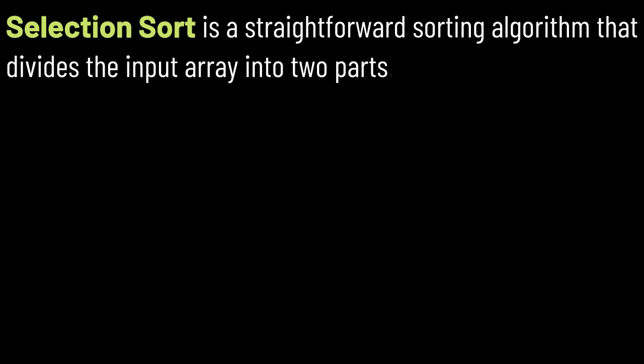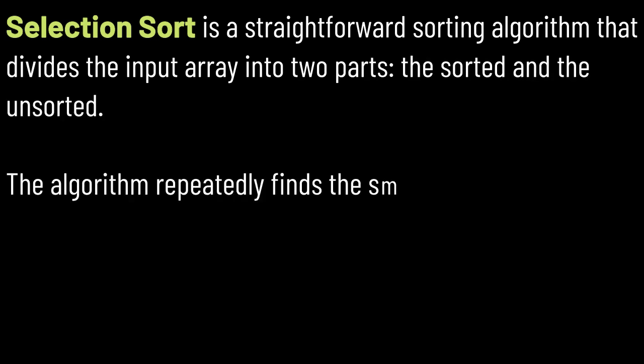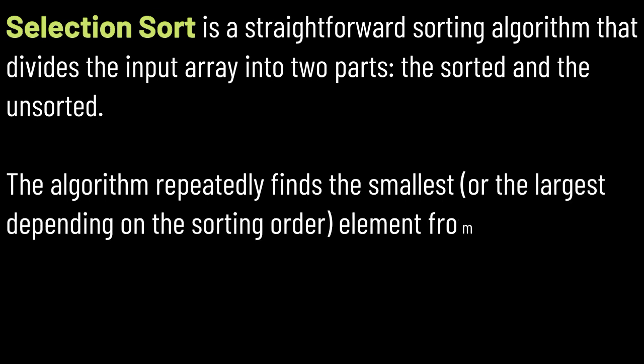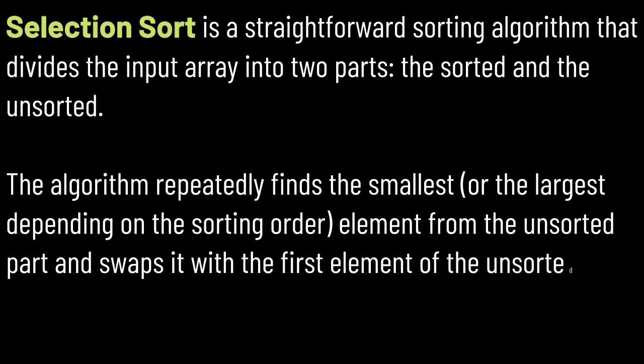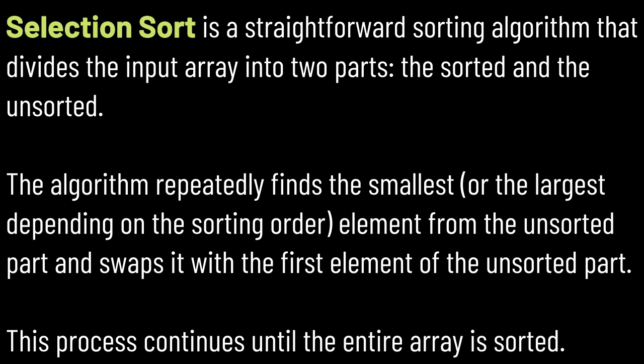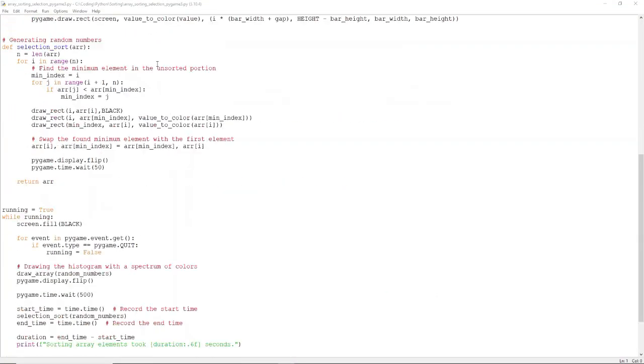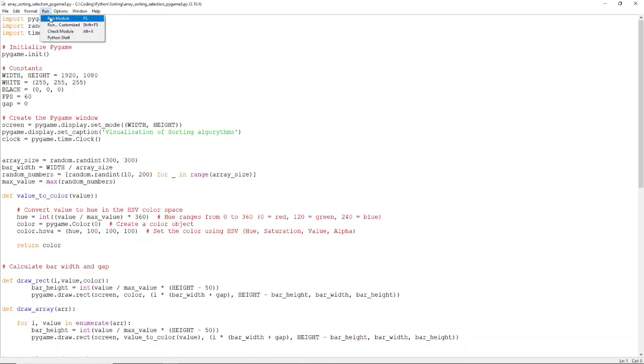Selection Sort is a straightforward sorting algorithm that divides the input array into two parts: the sorted and the unsorted. The algorithm repeatedly finds the smallest, or the largest depending on the sorting order, element from the unsorted part and swaps it with the first element of the unsorted part. This process continues until the entire array is sorted. Here is the Python code to visualize the Selection Sort algorithm.